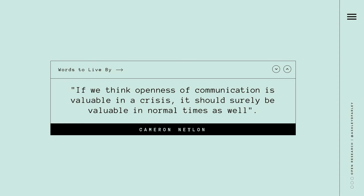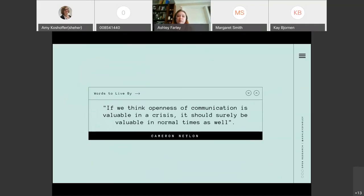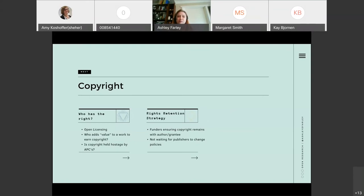I really like this quote from Cameron Neylon: 'If we think of openness of communications as valuable in a crisis, it should surely be valuable in normal times as well.' This is something funders are thinking a lot more about now — seeing how collaboration and openness really helped us get to interventions and a vaccine quite quickly. Why can't we replicate that for climate change, Alzheimer's, or rare diseases? There are so many issues out there that would really benefit from a change of this system, and addressing a lot of these issues is going to go a long way in getting us there.